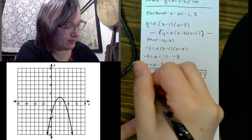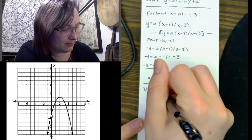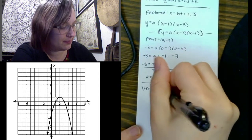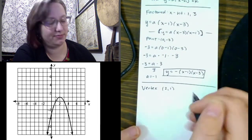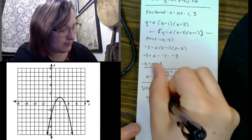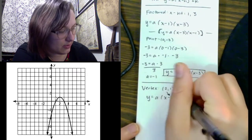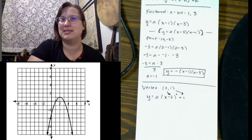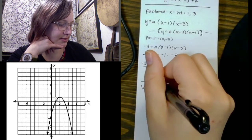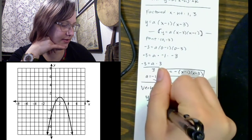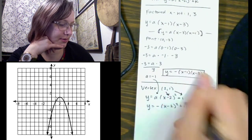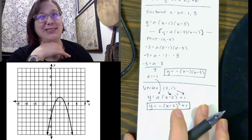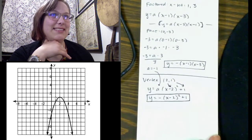Let's do vertex form. My vertex is at 2 comma 1, so h equals 2 and k equals 1. I have y equals a times x minus 2 squared plus 1. Notice the first number switches to be opposite but the last one stays the same — be careful with that. A is still negative 1, so y equals negative 1 times x minus 2 squared plus 1. You can check your work by graphing both equations in Desmos and seeing if they match.